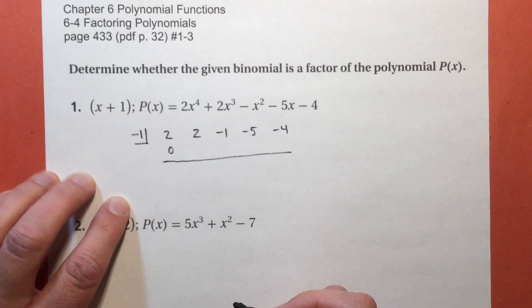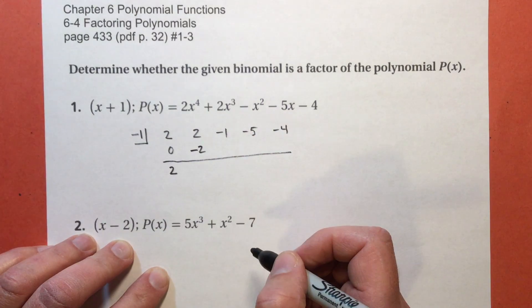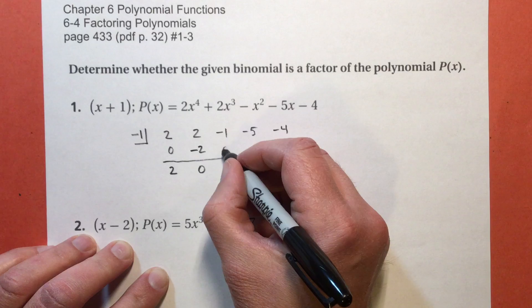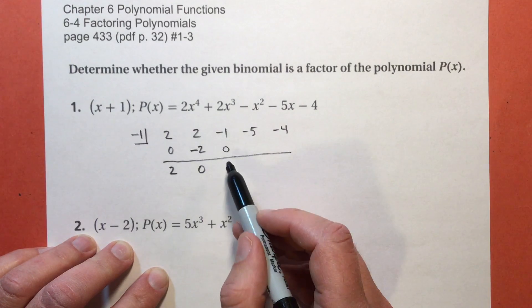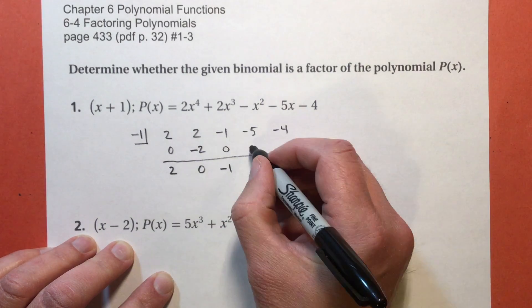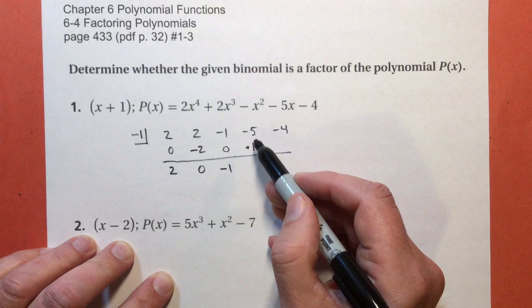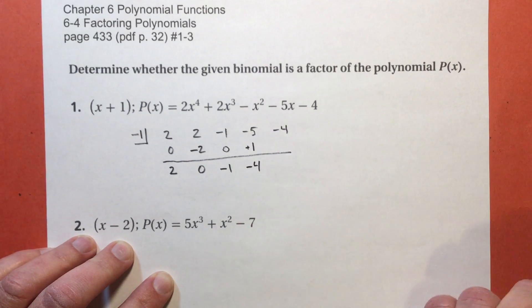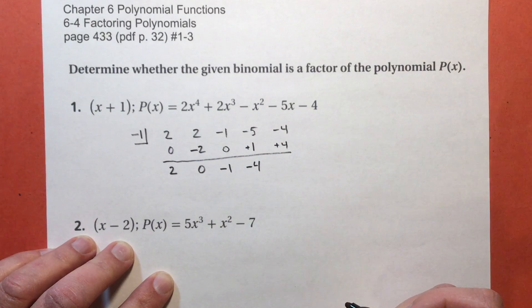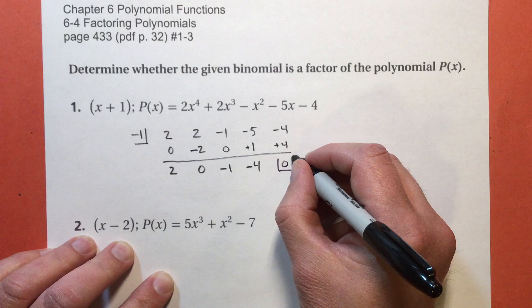I'm going to go quick because you've already seen synthetic division. 2 plus 0 is 2. Negative 1 times 2 is negative 2. 2 plus negative 2 is 0. Negative 1 times 0 is 0. Negative 1 plus 0 is negative 1. Negative 1 times negative 1 is positive 1. Negative 5 plus 1 is negative 4. And negative 1 times negative 4 is positive 4.